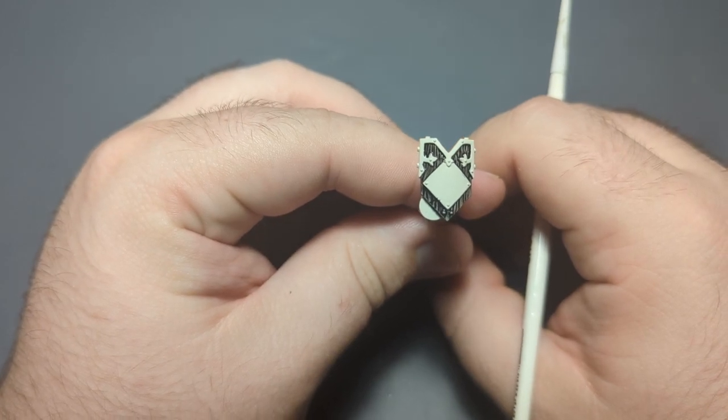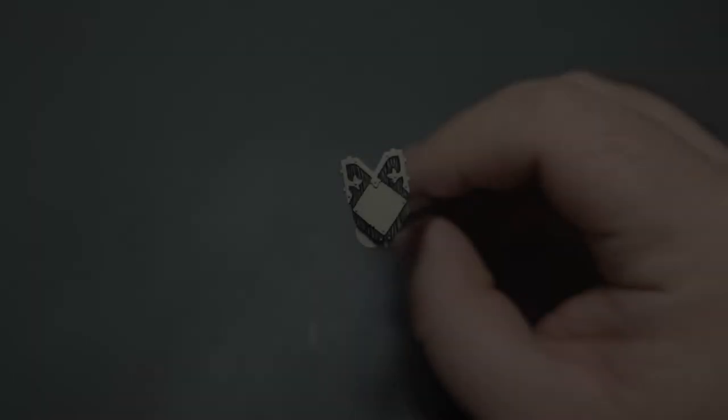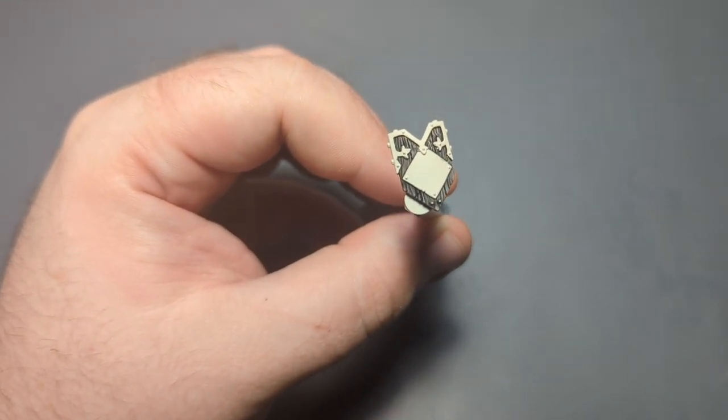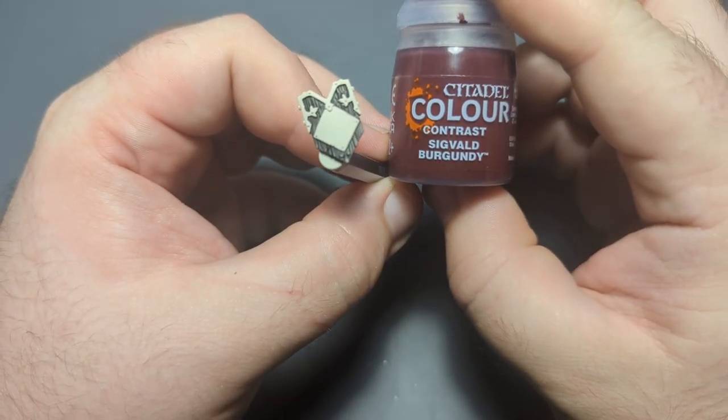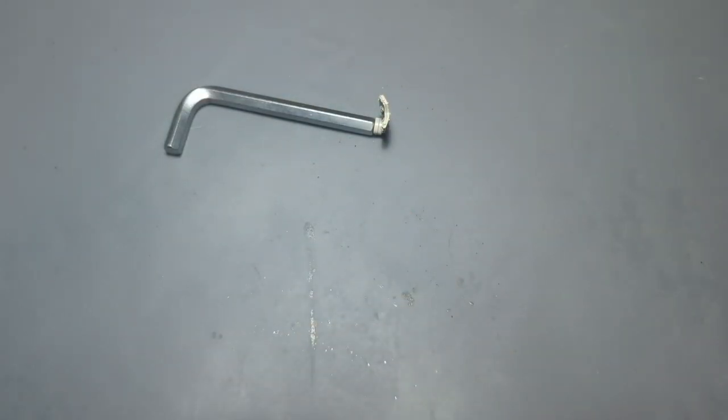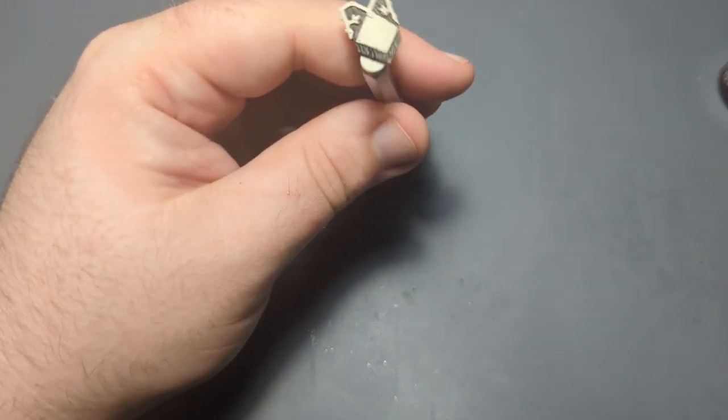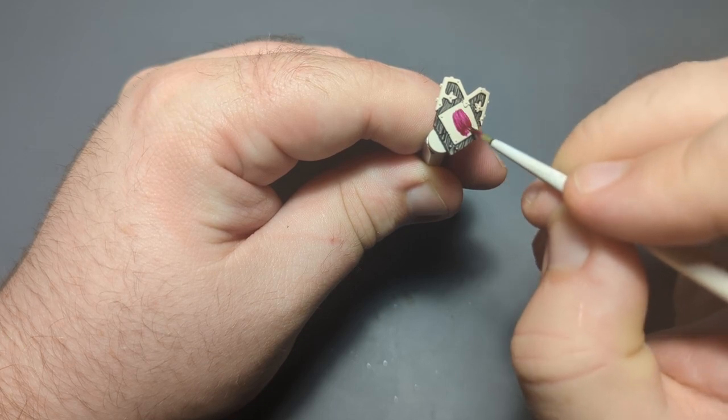All right, we are back and now we're going to do the middle diamond. And I wasn't really sure what color to do this, so I'm just going to go with Sigval Burgundy. I think that's as close as you're going to get in the contrast speed paint sector. But if there is something better, then I apologize, but this is what I'm going to go with.